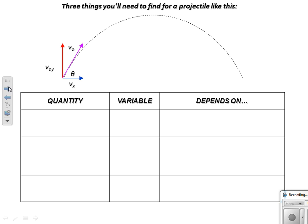Things you'll have to find: one thing we'll call max height, I call that delta y max. The other thing you'll have to find is hang time or flight time, I'll call it T total. The third thing you'll have to find is delta x, which we call the range.